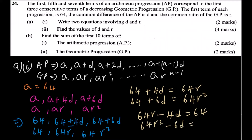Rearranging these, we get two equations: 64r minus 4d equals 64, and 64r² minus 6d equals 64. That's how you write the two equations, earning yourself the marks — one for expressing the setup and one for the two equations.